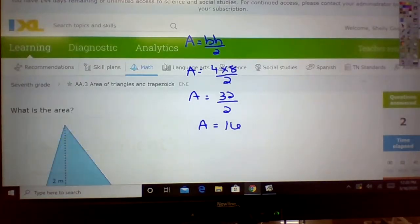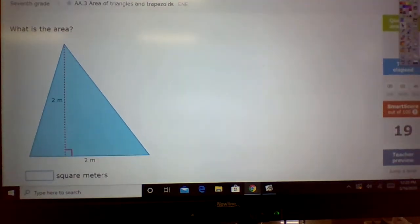Alright, again do not use the diagonals. You have 4 times 8 divided by 2. A is equal to 32 divided by 2. A is equal to 16.